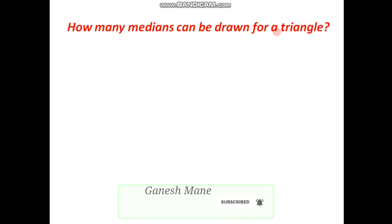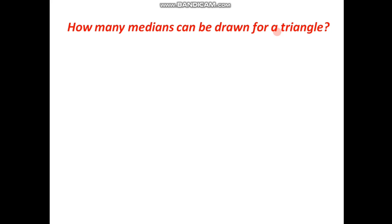Now one question arises here: how many medians can be drawn for a triangle? Let us try to find the answer. Consider a triangle PQR where points P, Q and R are the vertices. As there are three sides of a triangle — PQ, QR and PR — there are three midpoints for these three sides. Let point S be a midpoint of side PQ, point T be a midpoint of side QR, and point U be the midpoint of side PR. So, if we join vertex P to point T, which is the midpoint of side QR, we get segment PT, which is the first median for triangle PQR.